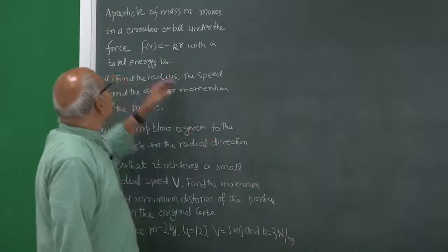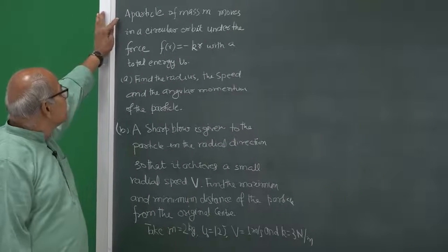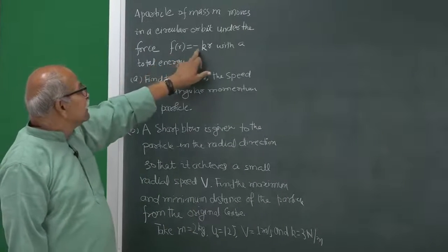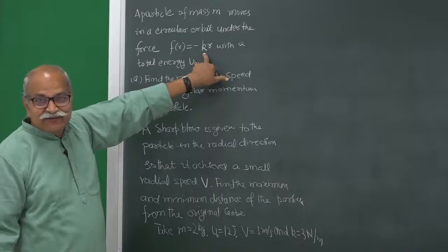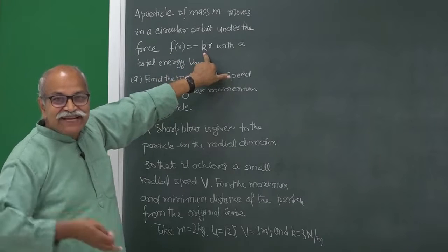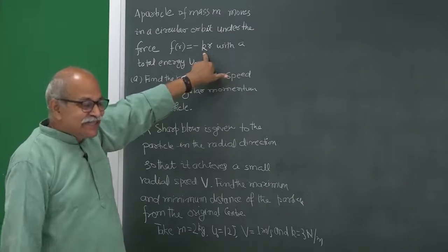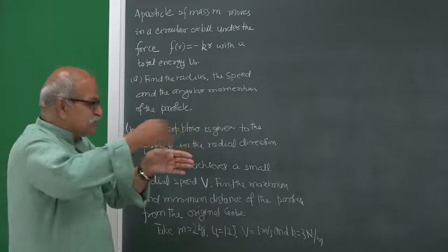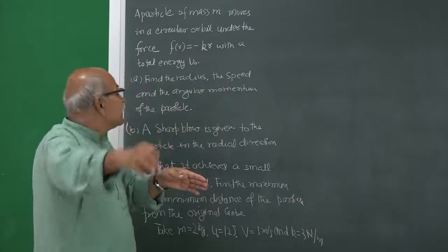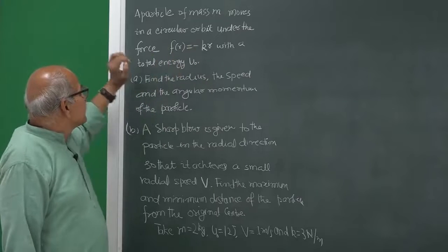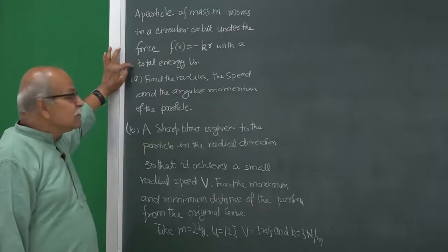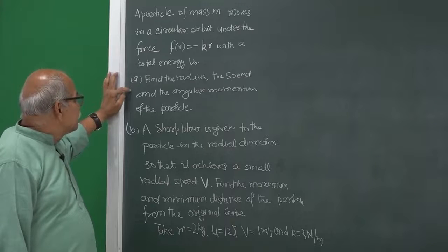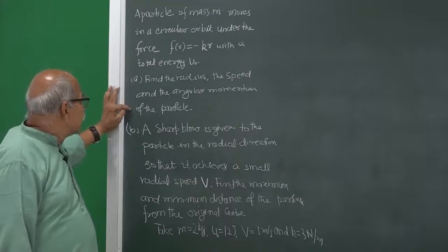A particle of mass m moves in a circular orbit under the force F(r) = -kr. This is a spring-like force — in the Kleppner book a figure is given where a spring is attached to the mass and this kind of force is applied — with a total energy u_naught. Find the radius, the speed, and the angular momentum of the particle.